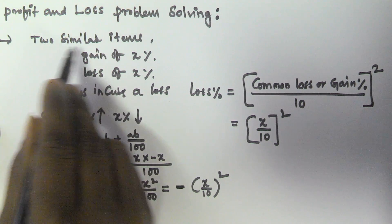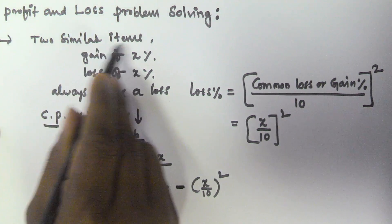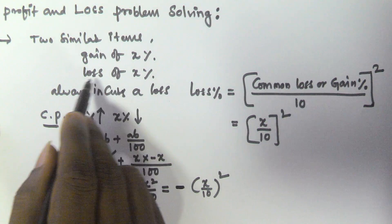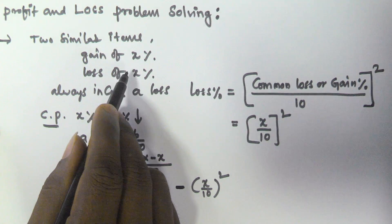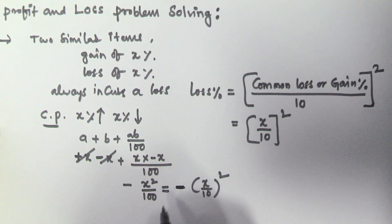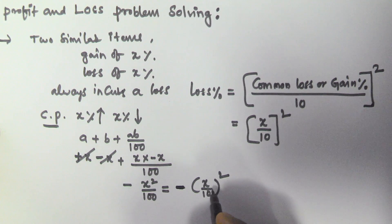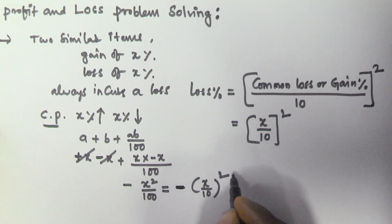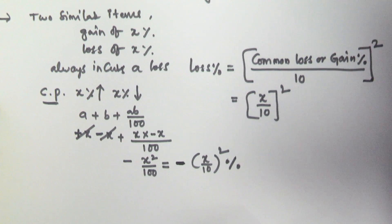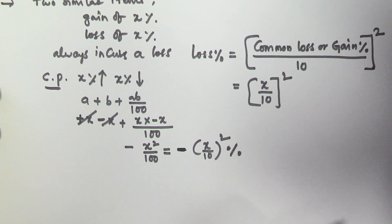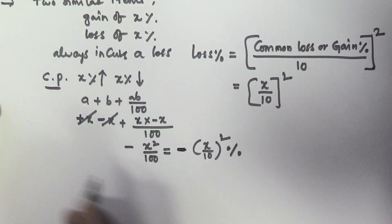So whenever we are selling two similar items — one at a gain of x percentage and one at a loss of x percentage — it is always going to be a loss, and the loss percentage is given by (x/10)². We will now see one problem based on this concept.